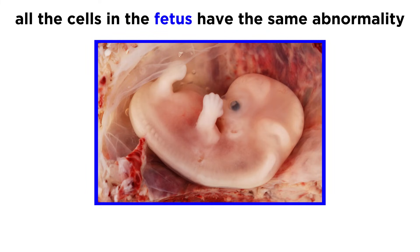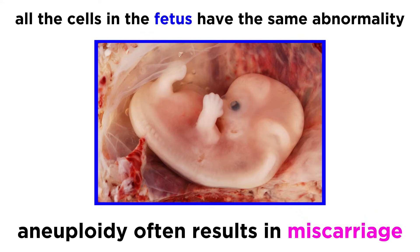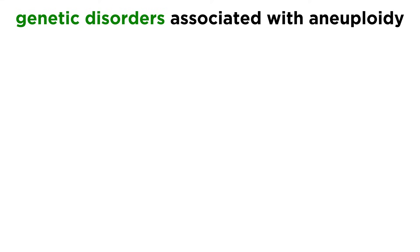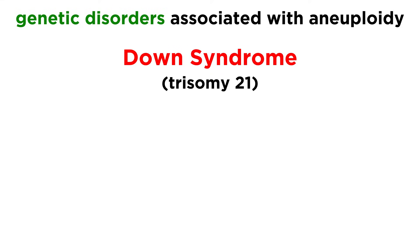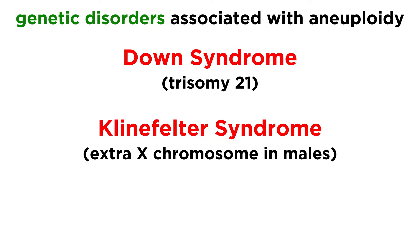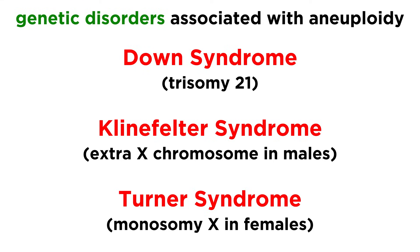As the zygote divides and develops into a fetus, all of the resulting cells will have the same abnormality, which will result in huge problems. In fact, embryos with such abnormalities often result in miscarriage, meaning spontaneous termination of pregnancy. In other cases, a baby can be born but with genetic disorders, such as Down syndrome, or trisomy 21, Klinefelter syndrome involving an extra X chromosome in a male, or Turner syndrome, which is monosomy X in females. More on these in the upcoming pathology series.